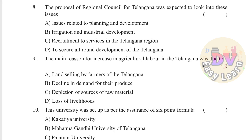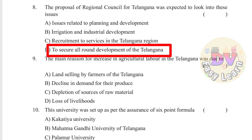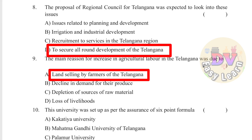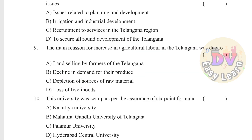Question 8: The proposal of a Regional Council for Telangana was expected to look into these issues — Answer: To secure all-round development of Telangana. Question 9: The main reason for the increase in agricultural labor in Telangana was due to — Answer: Land selling by farmers of Telangana. Question 10: This university was set up as per the assurance of the 6-point formula — Answer: Hyderabad Central University.